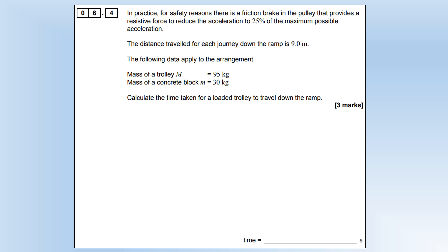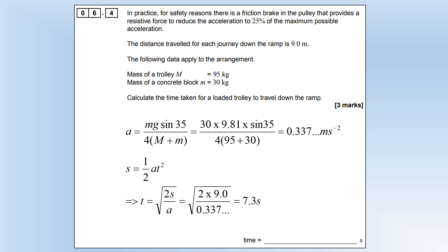In practice, for safety reasons, there is a friction brake in the pulley that provides a resistive force to reduce the acceleration to 25% of the maximum possible acceleration. The distance is 9 meters down the ramp. Now we've got the masses; calculate the time taken. First, we can calculate the actual acceleration, which is the maximum over 4. Plug the numbers in, gives us an acceleration of 0.337 m/s². The initial velocity is going to be 0, so we can just use s = ½at². Plug the numbers in, giving us 7.3 seconds.